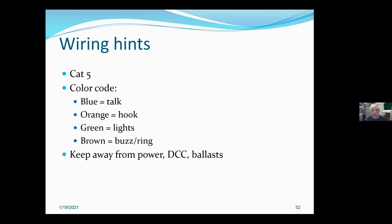Wiring hints: I generally use Cat5 — it's inexpensive and has a couple of extra pairs for auxiliary functions. I would generally use the blue pair for talk, the orange pair for hook switch indication, green for a light you're sending out that would light on the phone, and brown for ringing and buzzing. I would suggest keeping the wiring away from DCC, high voltage power, AC, ballasts, anything that will induce noise.